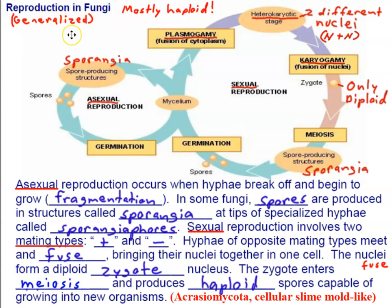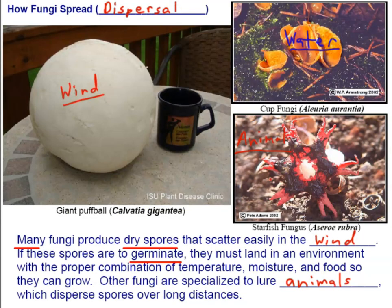That's the generalized life cycle of fungi; we'll look more specifically at sexual reproduction in different phyla, because that's what's used to classify them. Spores are very small — practically the size of smoke particles — and what's great about them is that they disperse far and wide. Smoke is made of tiny particles easily carried by wind, and spores are about the same size, so wind is one major mode of spore dispersal.